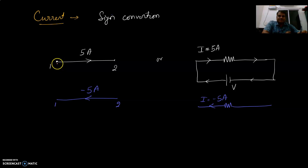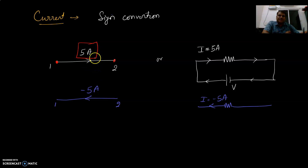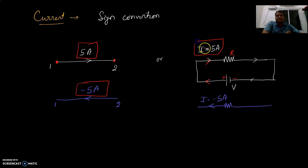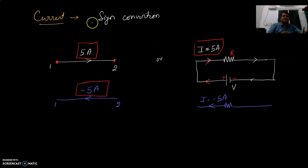How do we give a sign convention to current? If the current is flowing from terminal 1 to 2 and we name it 5 amperes, then if the direction is reversed, we simply write it as minus 5 amperes. For example, in a circuit with a voltage source and a resistor, current passes from the positive terminal through the resistor back to the negative terminal — that is 5 amperes. If we represent the arrow in the opposite direction, then it is minus 5 amperes. That is the sign convention.